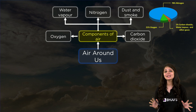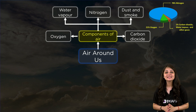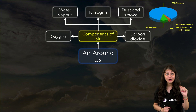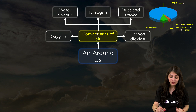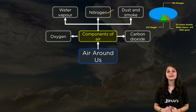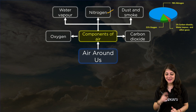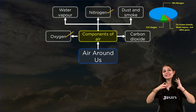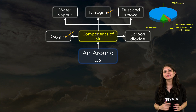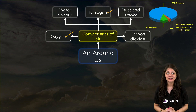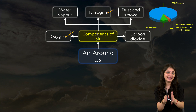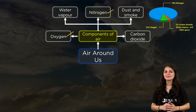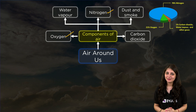Nitrogen is the most abundant gas in the atmosphere. It is not a supporter of combustion. Coming to oxygen now — oxygen is the second most abundant gas in the atmosphere and, unlike nitrogen, it is a supporter of combustion.